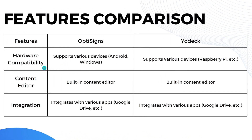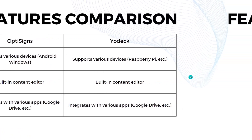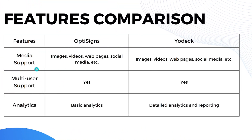For hardware compatibility, OptiSigns supports various devices including Android and Windows, while Yodeck also supports various devices including Raspberry Pi. Both platforms have a built-in content editor, which is a plus. Similarly, both OptiSigns and Yodeck integrate with various apps such as Google Drive and more.